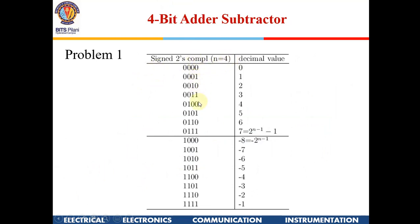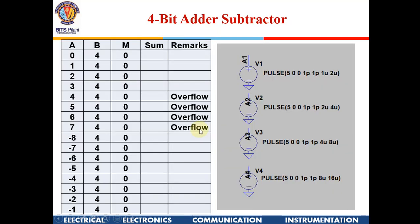In 2's complement representation, values go from 0000 for 0 up to 0111 for +7, then 1000 for -8 up to 1111 for -1. I am going to apply pulse trains with periods 2 micro, 4 micro, 8 micro, and 16 micro, which will sequentially generate values from 0 to -1.